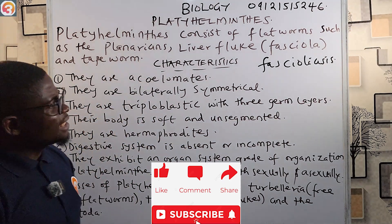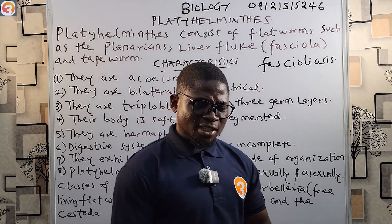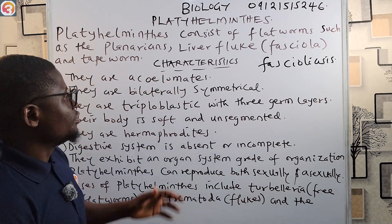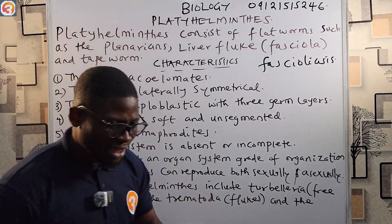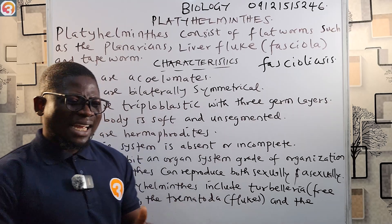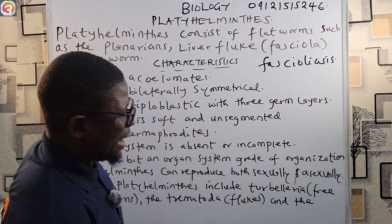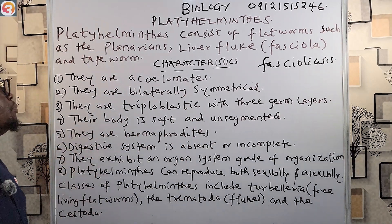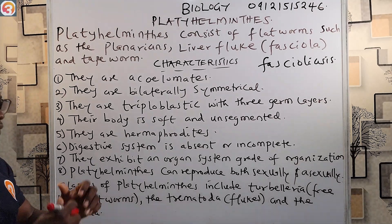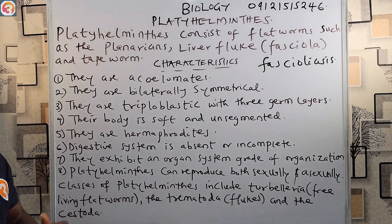Now let's look at the characteristics of Platyhelminthes. One: they are acoelomates — they do not have a body cavity. Two: they are bilaterally symmetrical — their body can be cut in only one plane into two identical halves. Three: they are triploblastic — they have three cell or germ layers, making them one of the simplest organisms with three distinct cell layers.